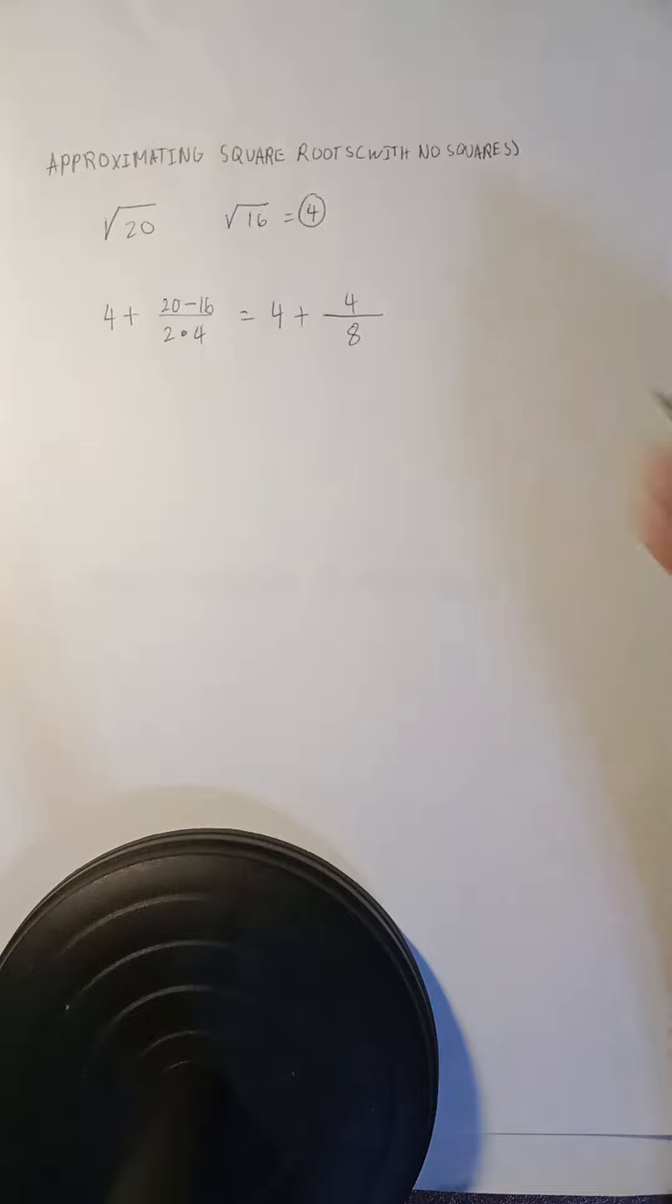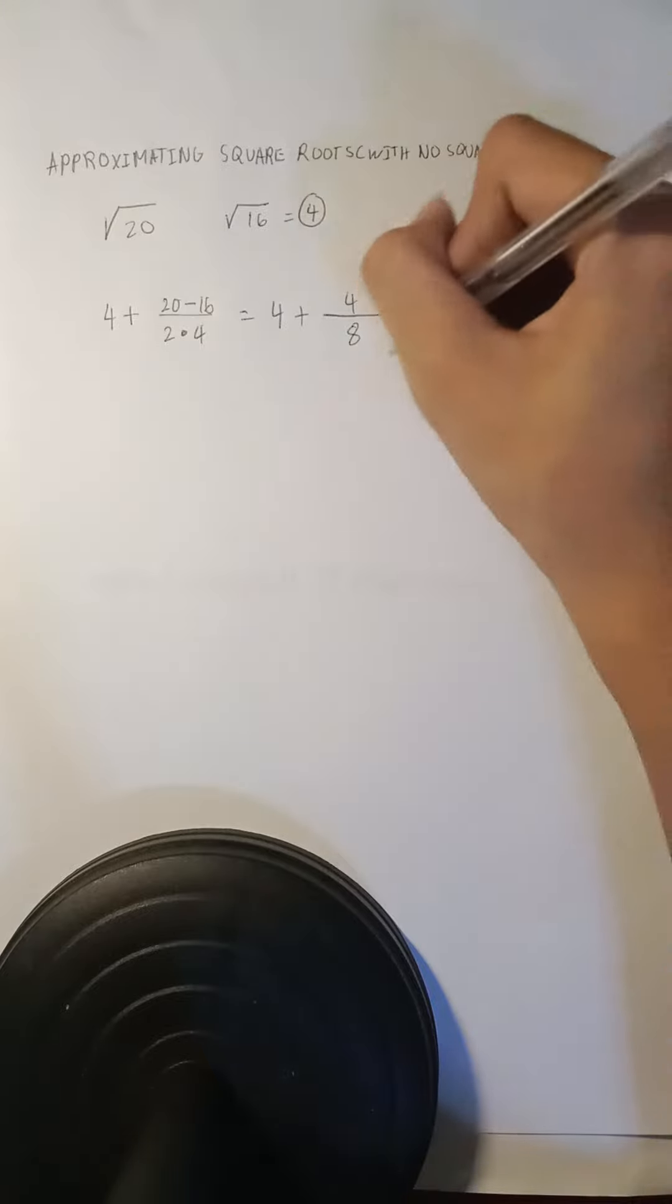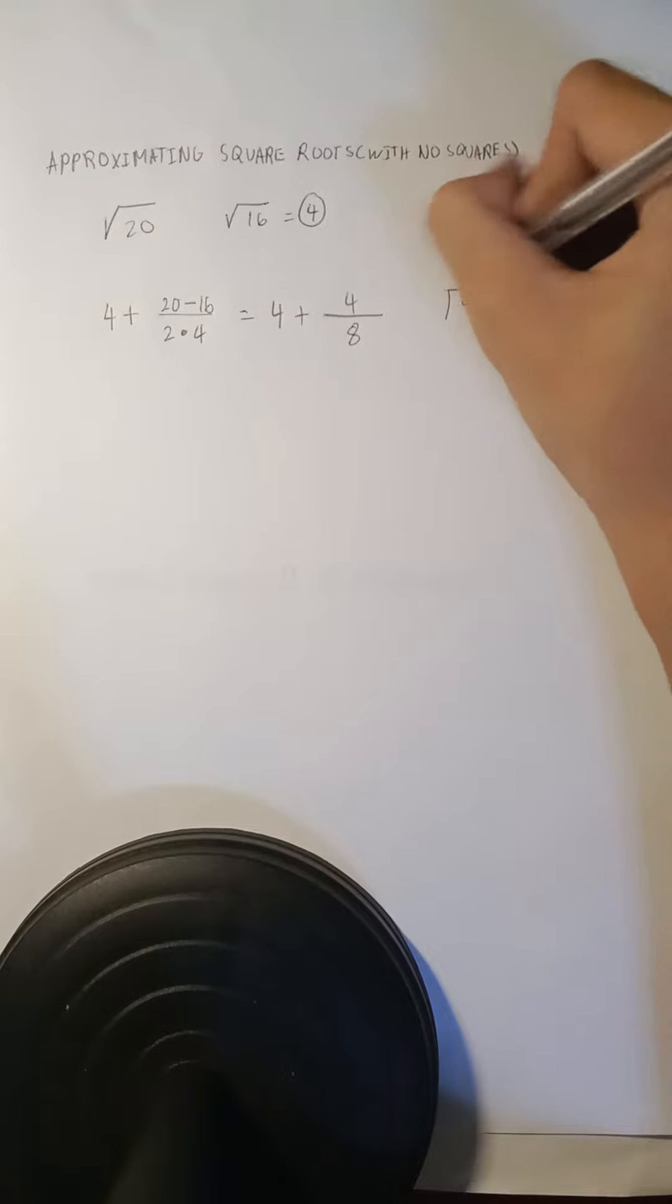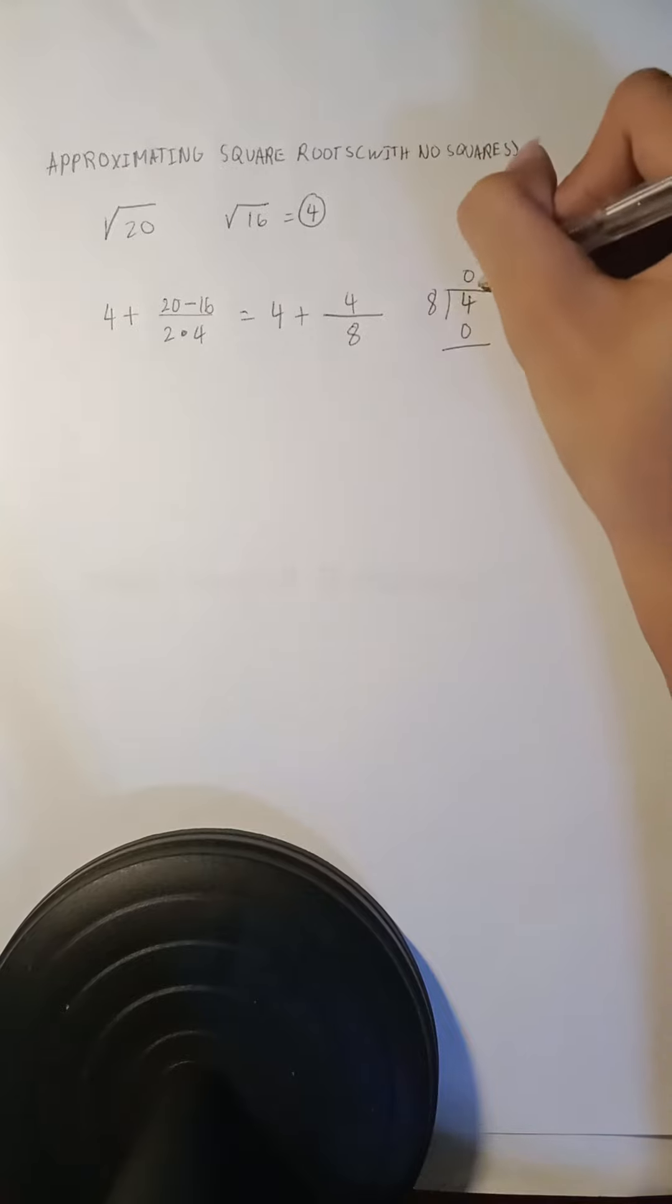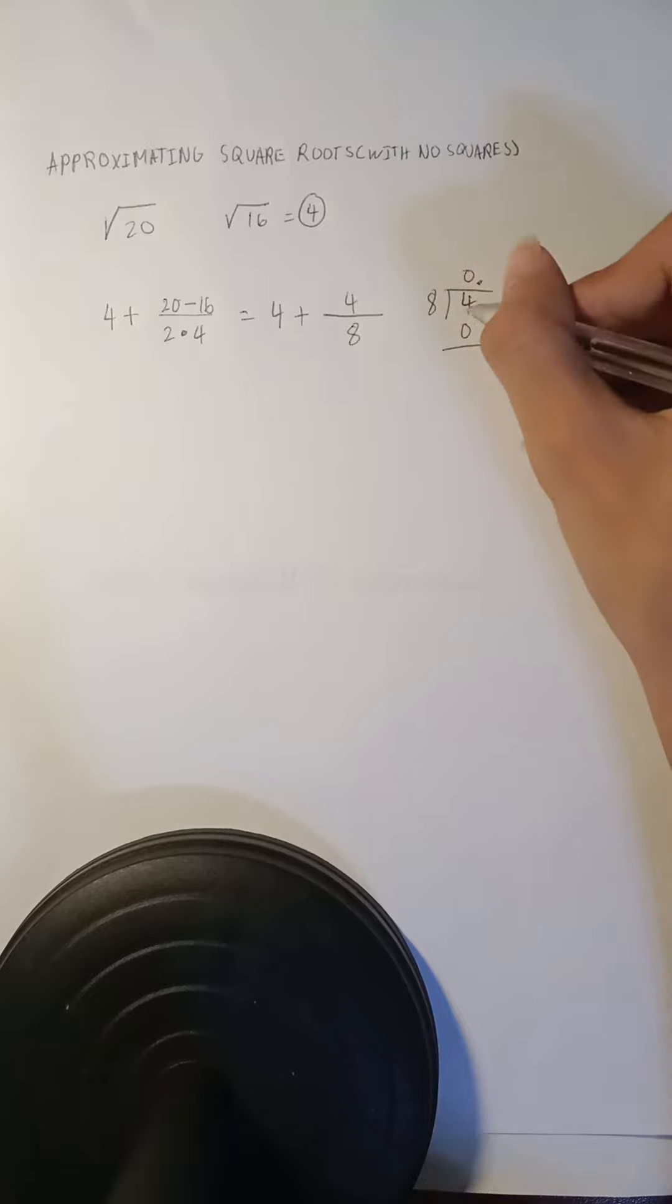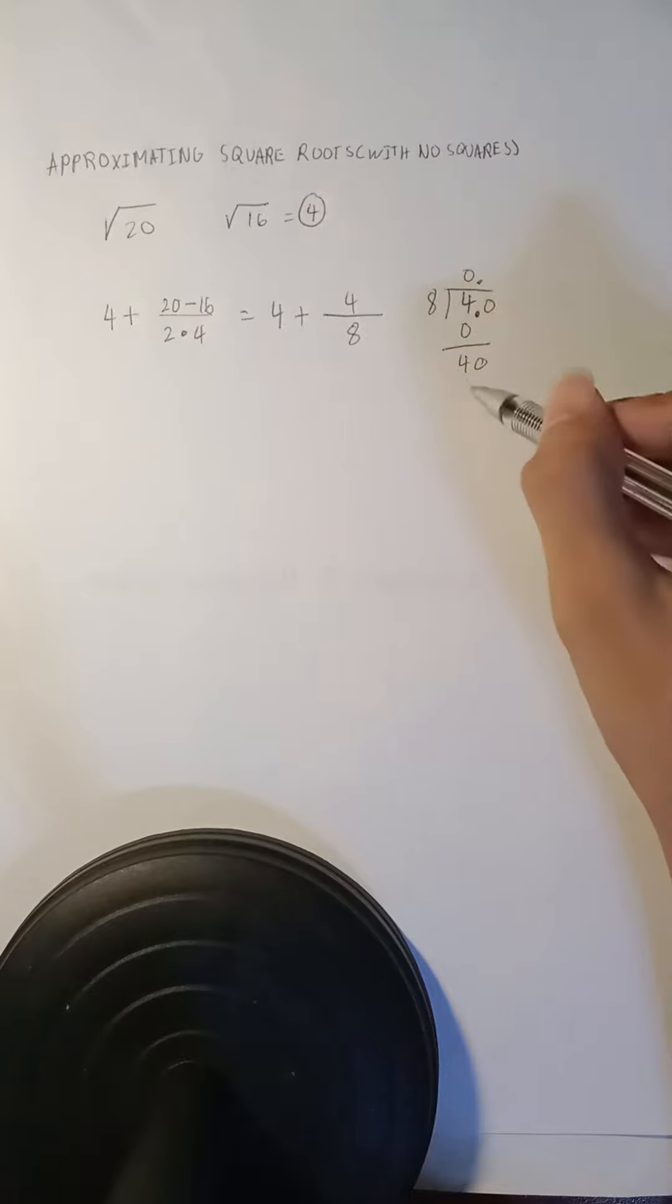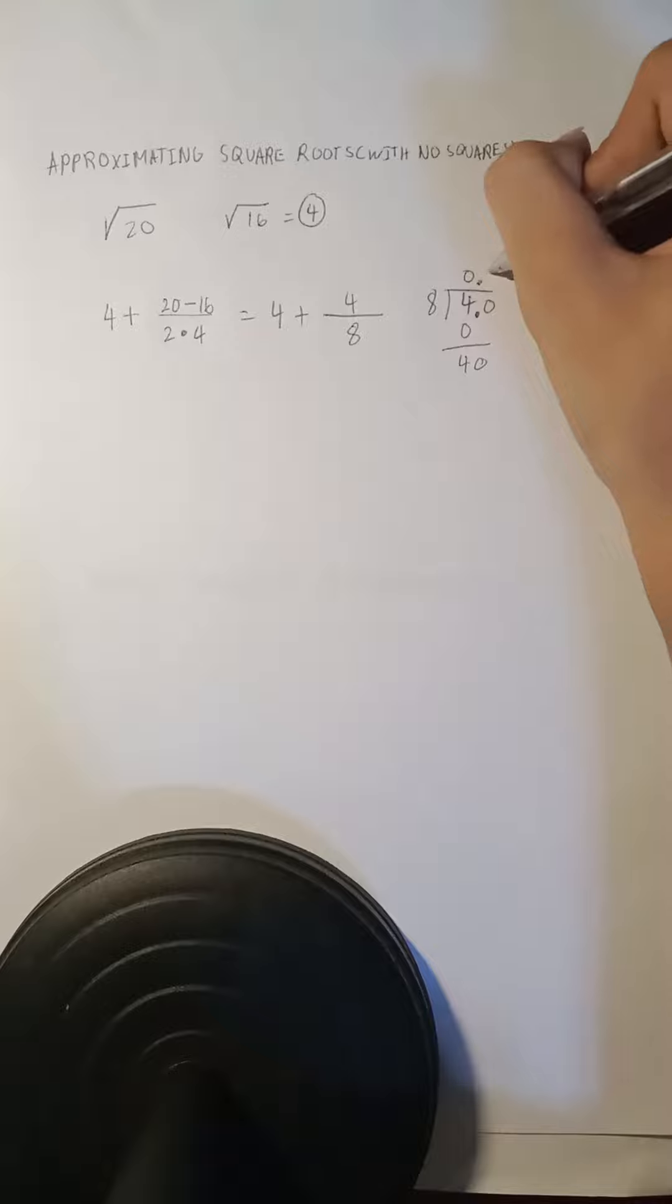For us to calculate this, let's divide it. 4 divided by 8. We know that we can't divide 8 to 4 because 8 is bigger than 4. So we're gonna put 0 first, then a decimal. So 4 minus 0 is 4. Then put a decimal here and add 0. Now we can divide 8 to 40 because we bring down 0. 40 divided by 8 is 5. Now we have 0.5 here.